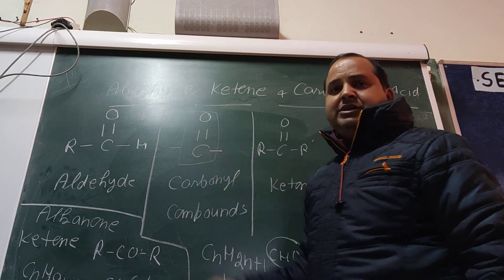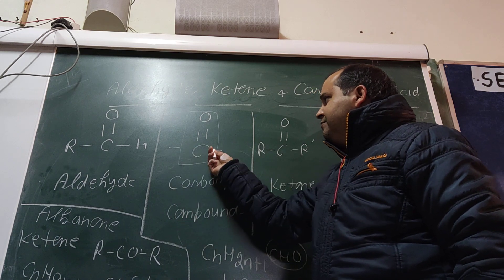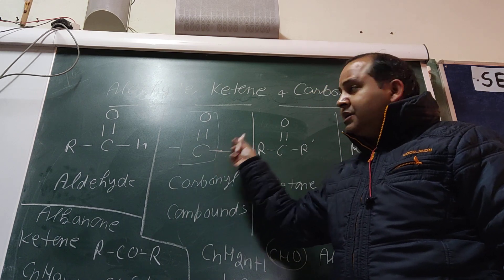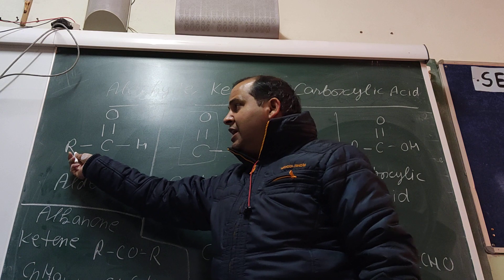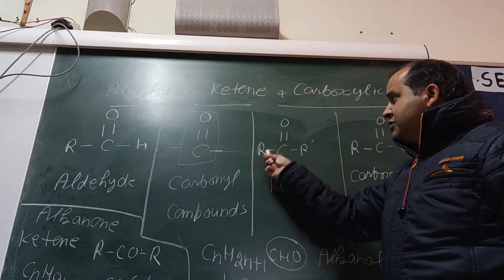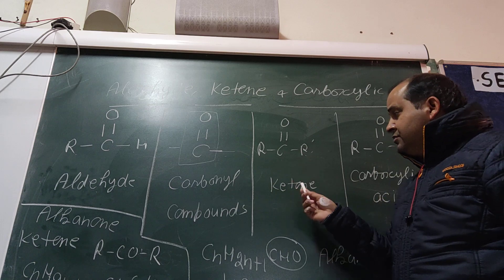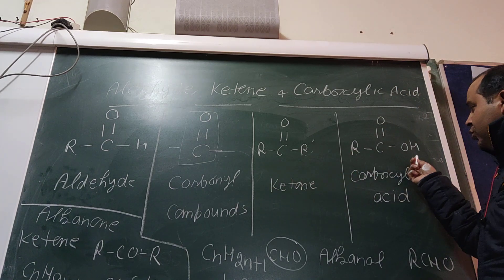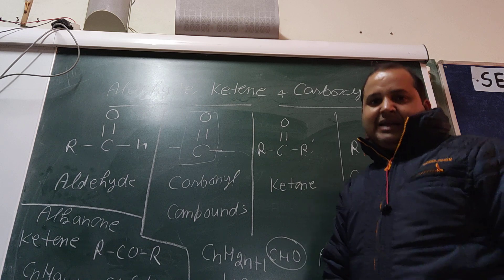This is the functional group, and on both sides we have groups. So if one side is R and the other side is H, it is called an aldehyde. If both sides have R, that is called a ketone. If one side is R and the other side is OH, it is called a carboxylic acid.